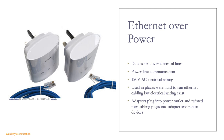Ethernet over Power is the opposite of Power over Ethernet — data is sent over existing electrical lines. This is called power line communication and typically uses 120-volt AC electrical cabling. It is typically used in areas where running ethernet cabling is difficult but electrical wiring already exists. Adapters with ethernet ports plug into power outlets, and devices connect to these adapters to send data signals over the electrical wiring.